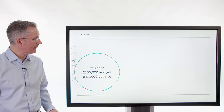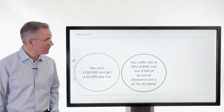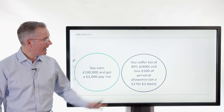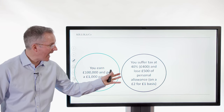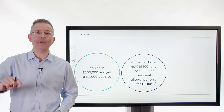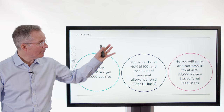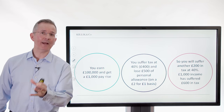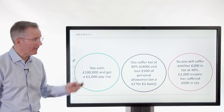How? If you earn £100,000 and get a £1,000 pay rise, you get clobbered quite heavily on that extra £1,000. You suffer income tax of 40% on the £1,000 — that's £400. And it'll cost you £500 of your personal allowance on a two-for-one basis, meaning you suffer another £200 in tax at 40%. So suddenly £1,000 of extra income has become £400 net — a 60% marginal tax rate. Quite sneaky.